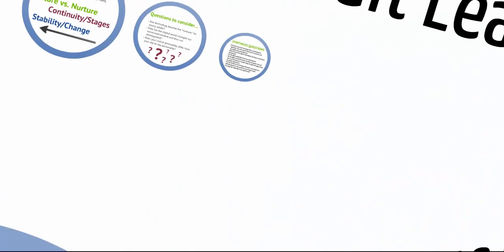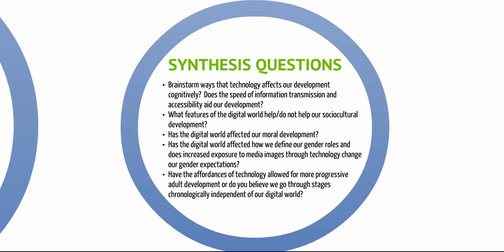Synthesis questions for this video: Brainstorm ways that technology affects our development cognitively. Does the speed of information transmission and accessibility aid our development? What features of the digital world help or do not help our sociocultural development? Has the digital world affected our moral development? Has the digital world affected how we define our gender roles? Does increased exposure to media images through technology change our gender expectations? And finally, have the affordances of technology allowed for more progressive adult development, or do we go through the same stages chronologically, independent of our digital world?